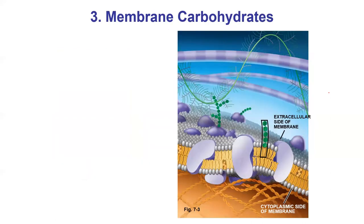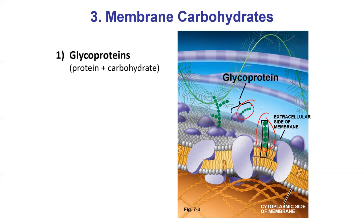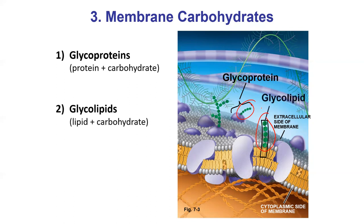The last component to talk about is membrane carbohydrates. Not all membranes necessarily have carbohydrates, and they're usually not found in massive amounts. Membranes are about 50/50 by weight for phospholipids and proteins. The carbohydrates are pictured here in green and they're found on the outside of the cell. These carbohydrates usually come in two forms: glycoproteins or glycolipids, meaning the carbohydrates are covalently attached to a phospholipid or to a membrane protein.